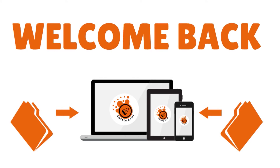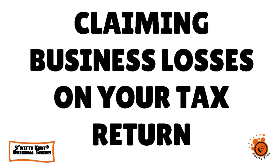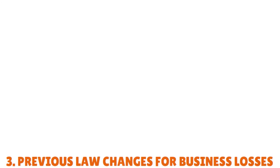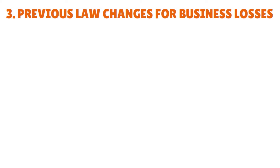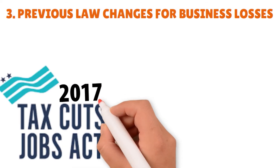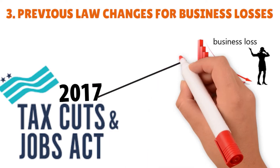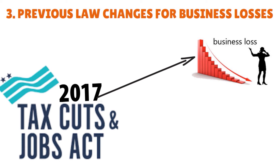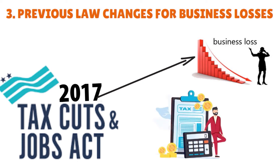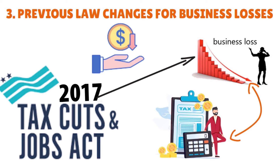Let's talk about the previous law changes for business losses. The 2017 Tax Cuts and Jobs Act made several significant changes to the way business losses are handled. The tax loss carryback is no longer available — you can still carry a business loss forward to future tax years, but you can no longer carry a net operating loss back to past years. The amount you can carry forward is also limited to 80% of taxable income, but you can go forward for an unlimited number of years.